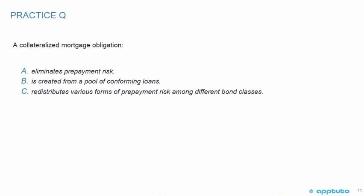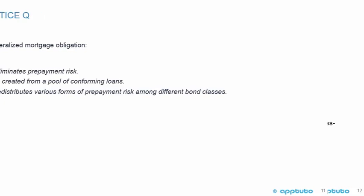Practice question regarding collateralized mortgage obligations: A collateralized mortgage obligation (CMO): A. eliminates prepayment risk; B. is created from a pool of conforming loans; or C. redistributes various forms of prepayment risk among different bond classes.